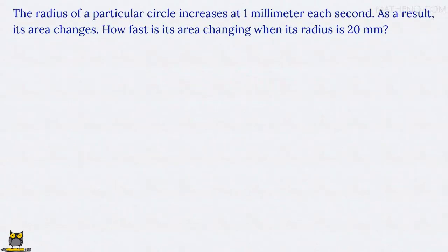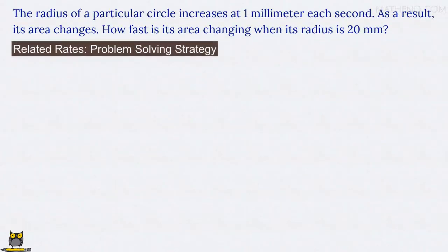We'll use our four-step problem-solving strategy for related rates problems to tackle this, since it works every time. We first draw a picture of the physical situation, which is a circle with the radius that we'll label r.